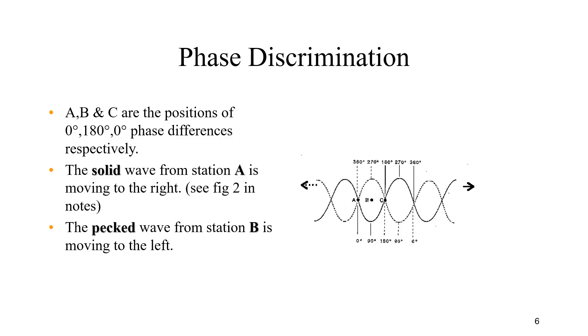LORAN C is not a continuous wave system and differs from the old systems of DECA and OMEGA. Here the pulses are transmitted at a specified rate called the pulse repetition rate, and transmissions from stations are time synchronized using stable atomic oscillators.